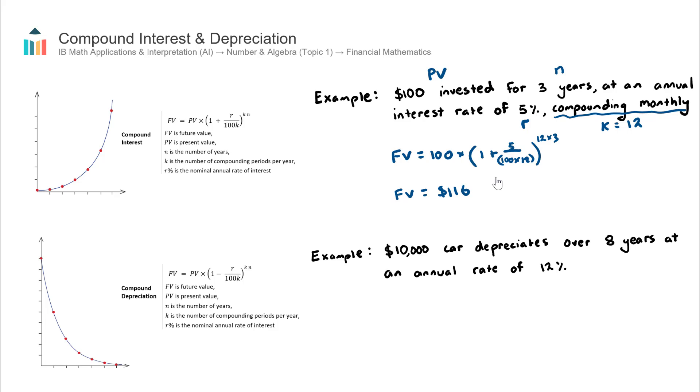So that's compound interest. Let's now try a compound depreciation question. A $10,000 car, so that's the initial value, my PV, depreciates over 8 years. So my N will be 8 at an annual rate of 12%. So my annual rate, my interest rate is R. Now for compound depreciation questions, it's pretty much always going to have a K value of 1. Very rarely does it depreciate at a compounding rate that's not annual. So if it's not written, you can assume that the K value will be 1.